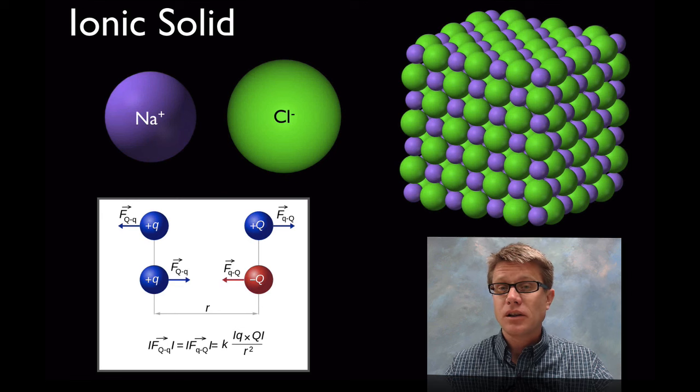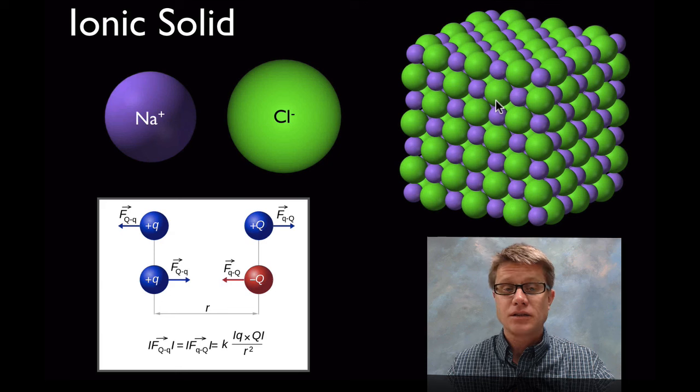What does an ionic solid look like? It looks like this. It's going to be this nice lattice with alternating ions.